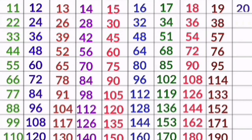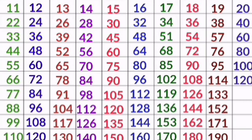20 1s are 20, 20 2s are 40, 20 3s are 60, 20 4s are 80, 20 5s are 100, 20 6s are 120, 20 7s are 140, 20 8s are 160, 20 9s are 180, 20 10s are 200.